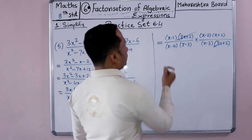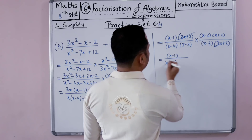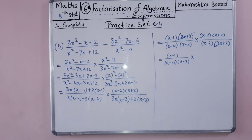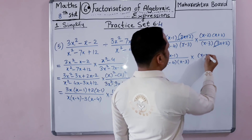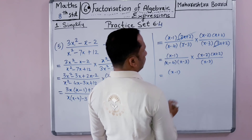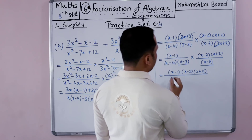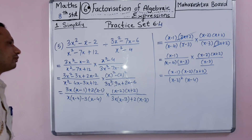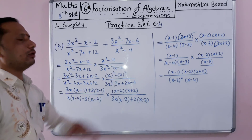After canceling the common 3x plus 2 factors, the remaining expression is x minus 1 over x minus 4, times x minus 3 times x minus 2 times x plus 2 divided by x minus 3. Writing this out: x minus 1 times x minus 2 times x plus 2, divided by x minus 3 squared times x minus 4. This is the final solution for equation number 5. The approach is to factor, identify common factors, cancel them, and write the remaining solution.